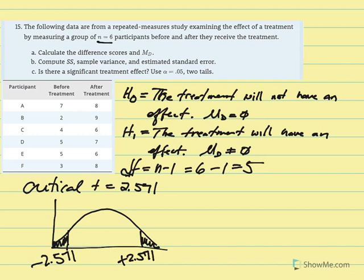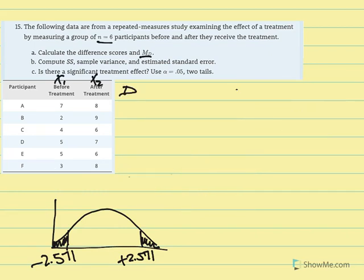We're asked to compute the average mean difference, so we need to calculate our D scores — the difference scores between one treatment and the other. Our D scores are equal to x2 minus x1, where x2 is the after score and x1 is the before score. Calculating each: 8 minus 7 is 1, 9 minus 2 is 7, 6 minus 4 is 2, 7 minus 5 is 2, 6 minus 5 is 1, and 8 minus 3 is 5.